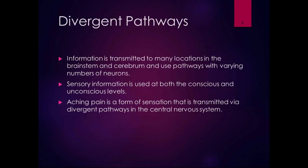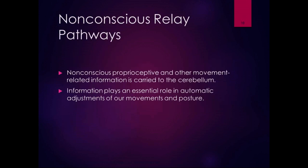Divergent pathways transmit information to many locations in the brainstem and cerebrum using pathways with varying numbers of neurons. Sensory information is used at both conscious and non-conscious levels. Aching pain is a form of sensation transmitted via divergent pathways in the central nervous system. Non-conscious relay pathways carry non-conscious proprioceptive and other movement-related information straight to the cerebellum — not to the thalamus, not to the cerebral cortex. The information plays an essential role in automatic adjustments of movement and posture.